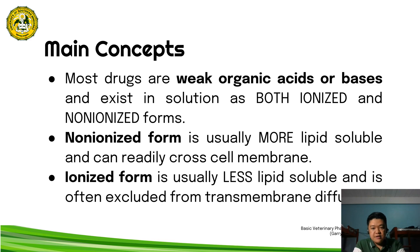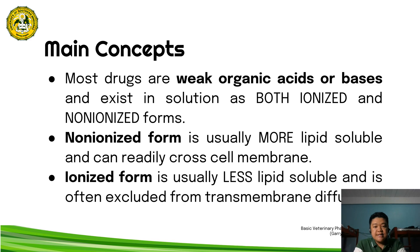According to this hypothesis, the non-ionized form of the drug is the portion that is more lipid-soluble, meaning it can readily pass through the cell membrane. The ionized form is the proportion of the drug that is less lipid-soluble, so it is excluded from transmembrane diffusion. When excluded from transmembrane diffusion, that portion of the drug will accumulate in that particular cellular or tissue compartment.